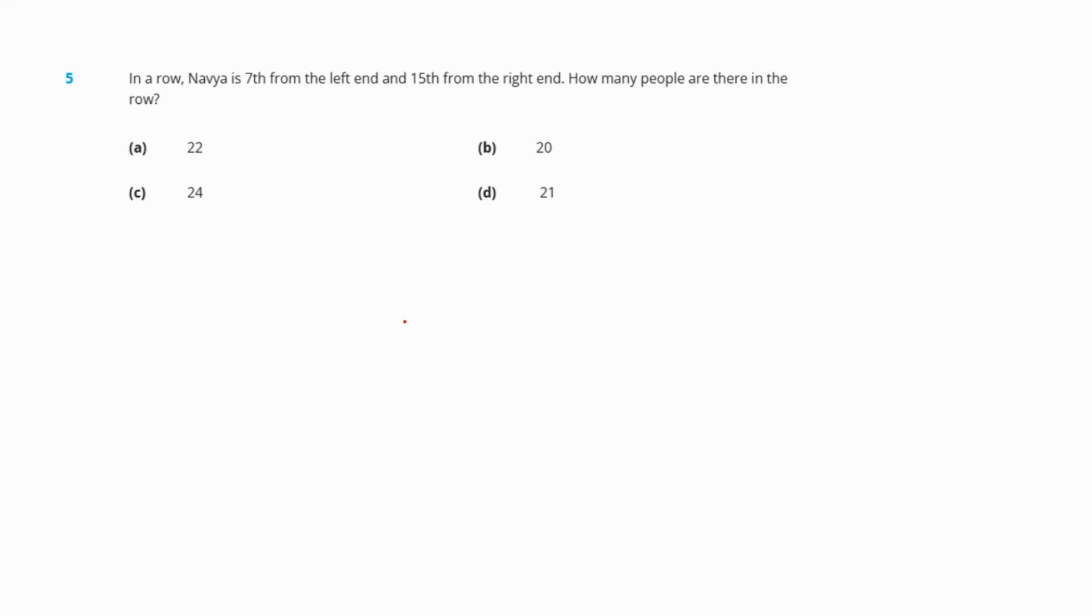To find the total number of people, from the left end Navia is 7th position and from the right end she's 15th position. So we add 7 plus 15 minus 1. This minus 1 is Navia herself, so it's 21. Our correct answer is option D, 21.